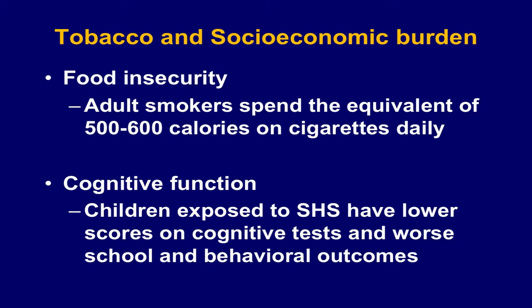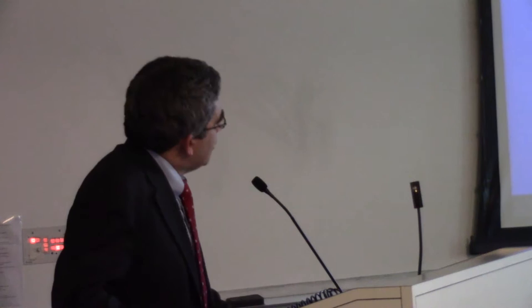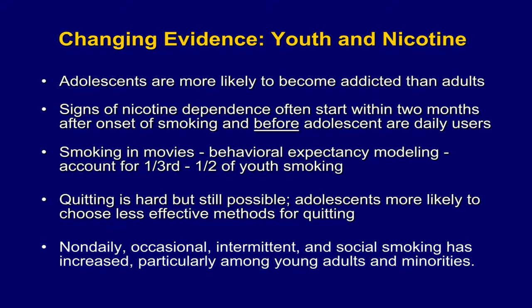Tobacco leads to food insecurity and hunger. Adult smokers in Bangladesh and India spend the equivalent of 500 to 600 calories per day on cigarettes. Smoking is associated with food insecurity and hunger in the U.S. and other developed countries as well. Children exposed to secondhand smoke have lower scores on cognitive tests and worse early school and behavioral outcomes. We talked about the changing evidence for youth and nicotine, that dependence often starts well before daily use. The behavioral expectancy from imagery in movies and TV accounts for a great deal of this.